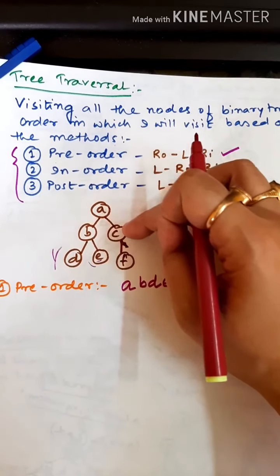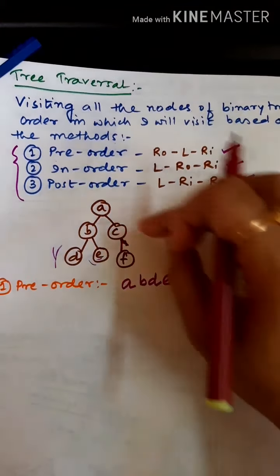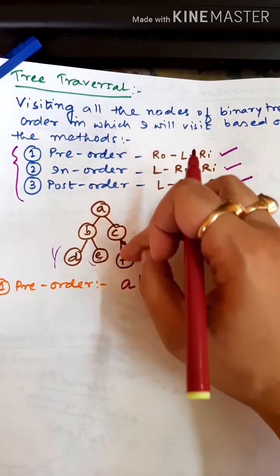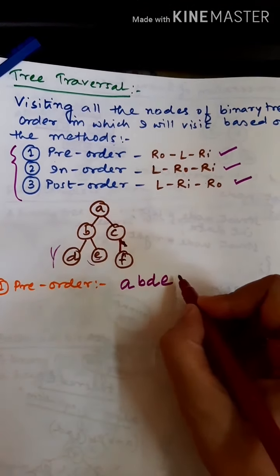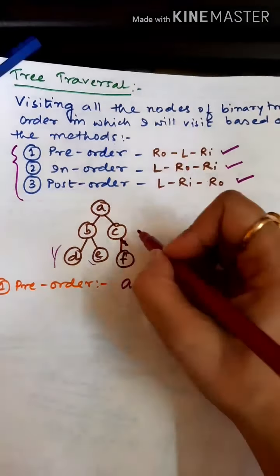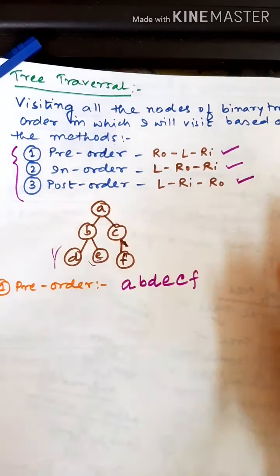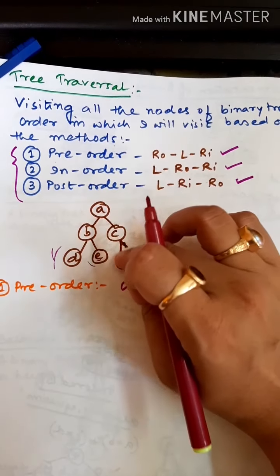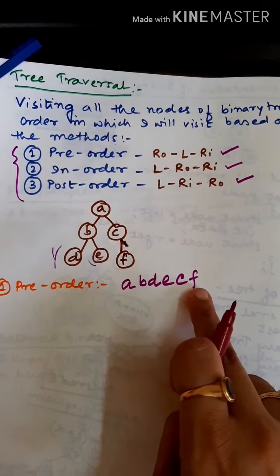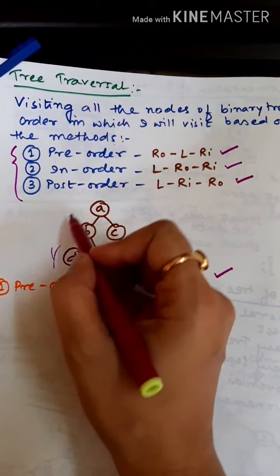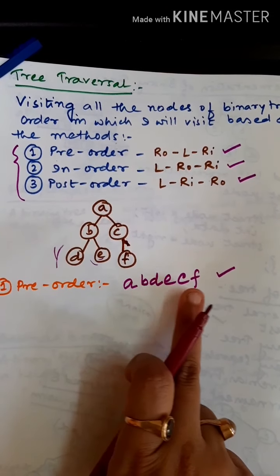Now the remaining part is the right subtree. In this right subtree consisting of C and F, C is the root so we place it first. The left subtree of C is F, and there is no right child — C has only one left child. So the pre-order traversal of this example is: A, B, D, E, C, F.